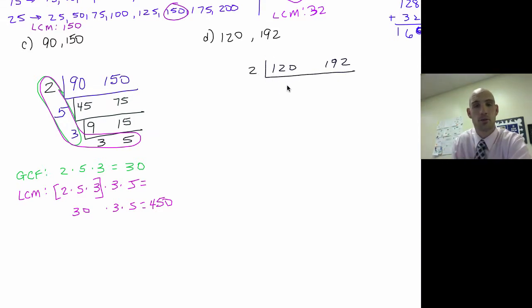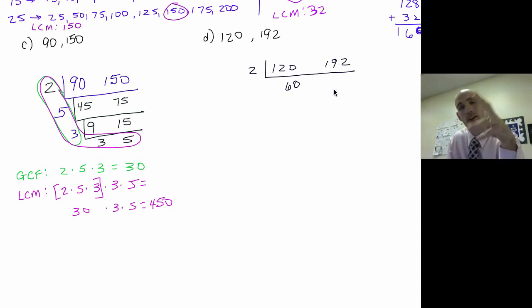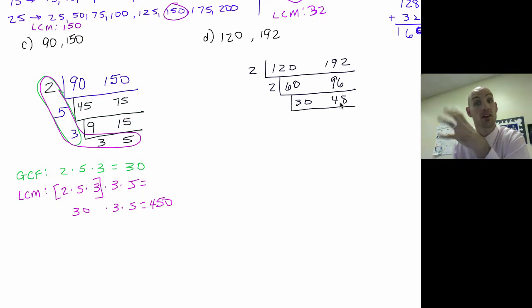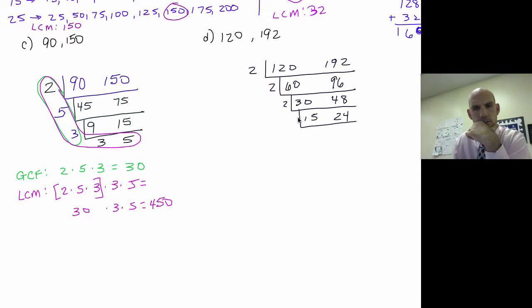Both 120 and 192 are even, so divide by 2: I get 60 and 96. Both even again, divide by 2: 30 and 48. Both even again — divide by 2: 15 and 24.